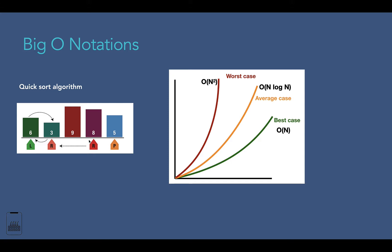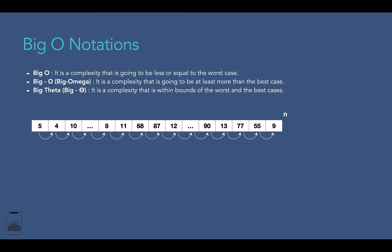To express the different scenarios of an algorithm, there are different Big O notations. The first one is Big O — it's a complexity that's going to be less than or equal to the worst case. For example, if you want to sort 1000 numbers, Big O measures the maximum time needed for sorting. Let's say we need a maximum of 10 seconds — this means we will never exceed 10 seconds. It can be 8 or 9 seconds, but never more than 10.